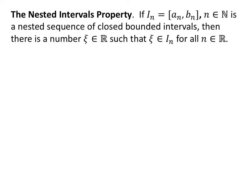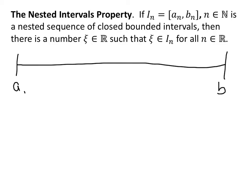Let's get a quick picture of what this is really looking like. Here may be my first interval, from a sub 1 to b sub 1. Now i sub 2 is an interval that's contained within this one — maybe it goes from here to there. So there's b2 and there's a2. Then b3 — maybe b3 is exactly the same as b2.